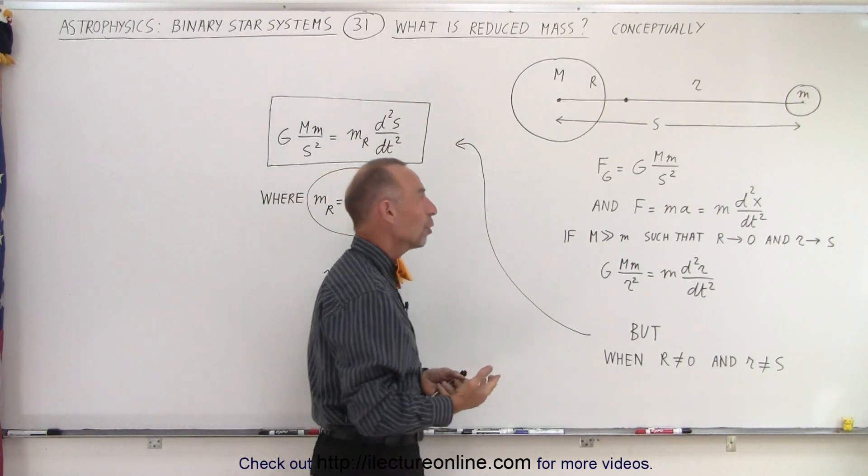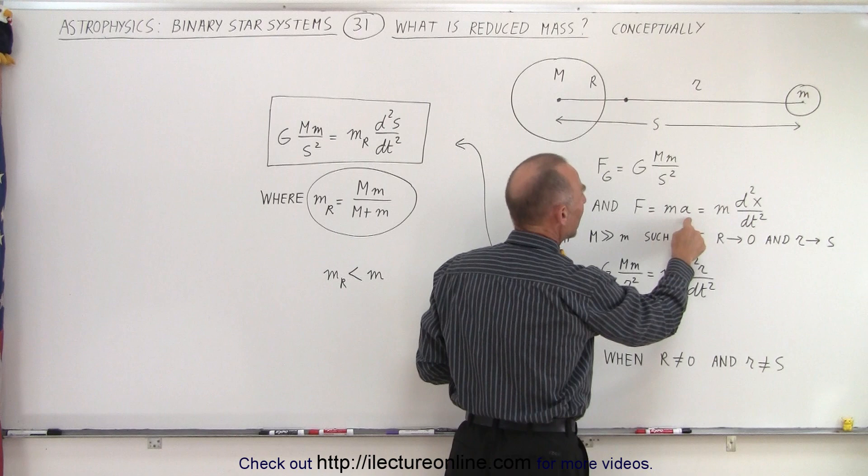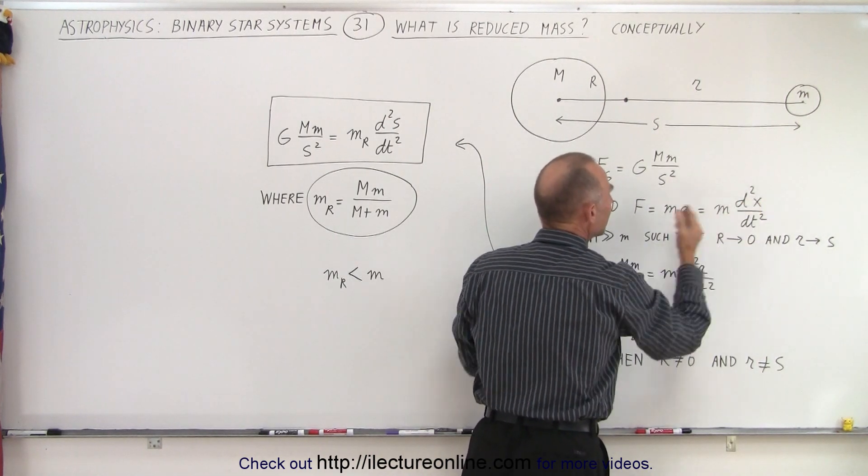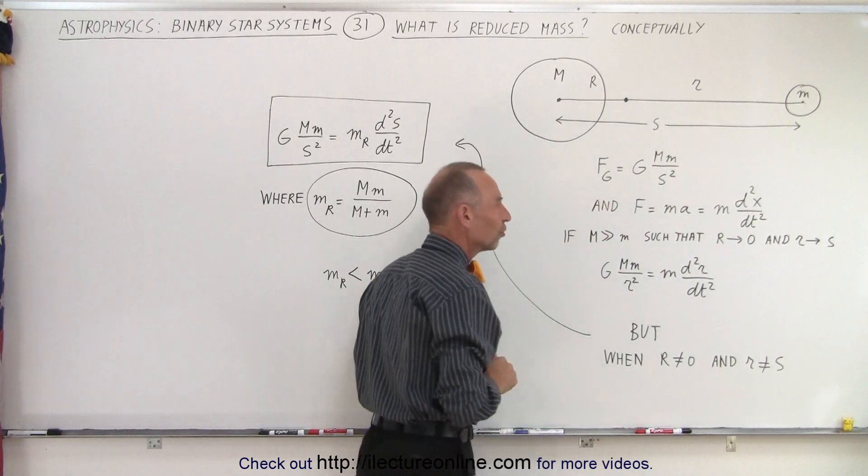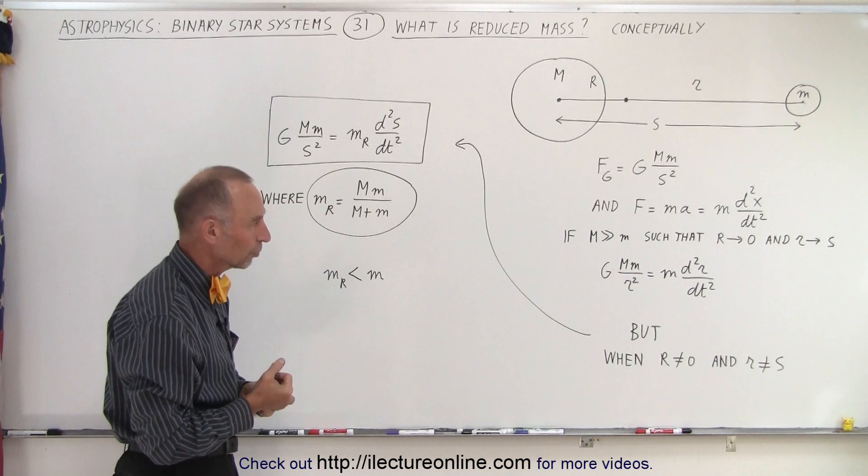We also know from Newton's second law that F equals ma, and in this case, a is therefore the second derivative with respect to time of the distance or position between the two objects, or the two planets, or the two stars.